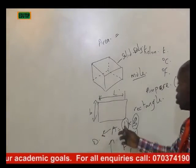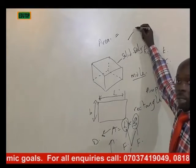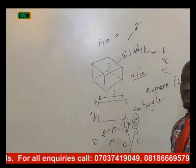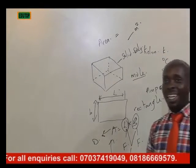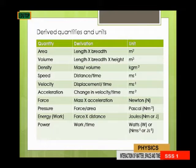So the SI unit of area is given as square meters. That is the SI unit. We also have volume.